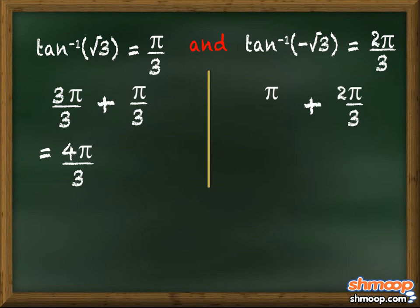To add π to 2π/3, we again have to make sure both numbers are under the same denominator. We can again multiply 3/3 to π to get 3π/3 + 2π/3. Adding across the top numbers, we get 3π + 2π = 5π/3.